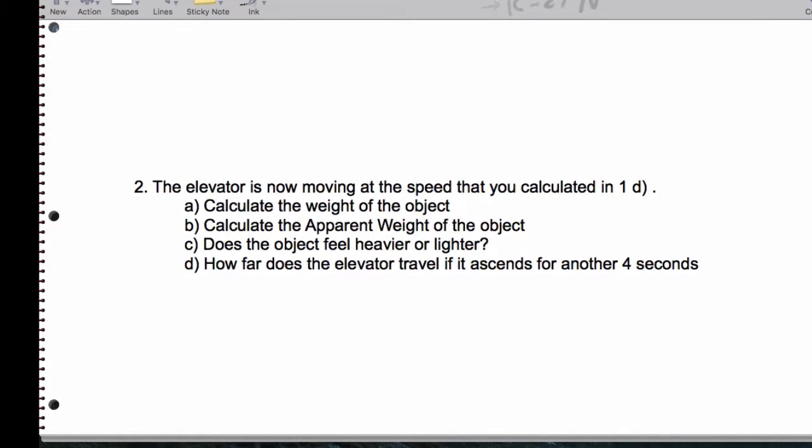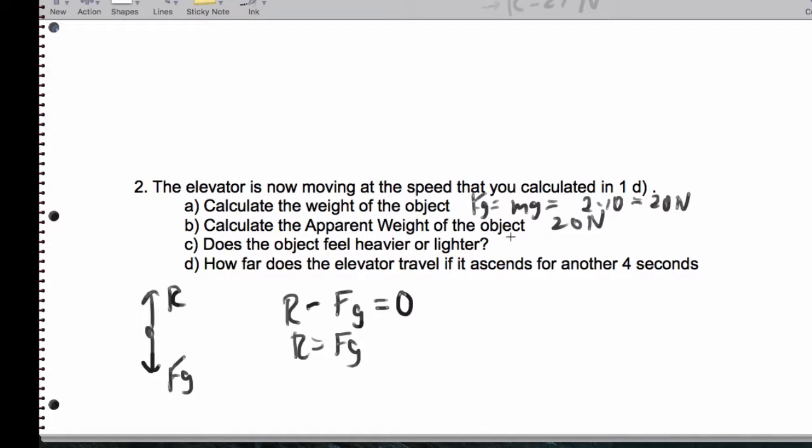Now, we're moving at a steady speed. If we're moving at a steady speed, that means we don't have acceleration. So the weight, Fg is mg, which is 2 times 10, which is 20 newtons. But now, check this out. We have the reaction force competing with the weight. But since there is no acceleration, these forces balance. So in this case, R actually does equal mg. We do get 20 newtons. This is a trick question. It feels the same.